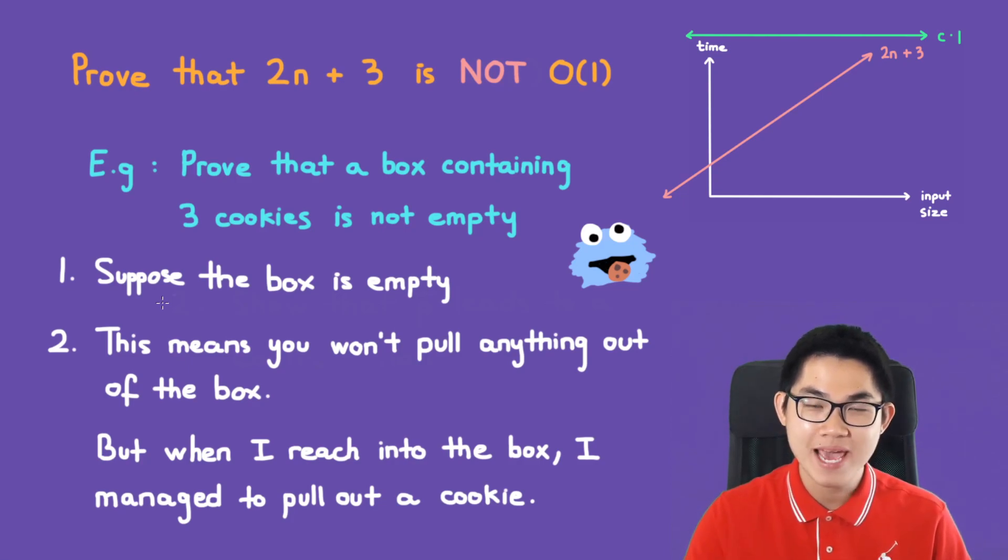But then when I reach my hand into the box, I'm able to pull out a cookie. But that contradicts with our initial assumption. And because of that, we know that the box is not empty.